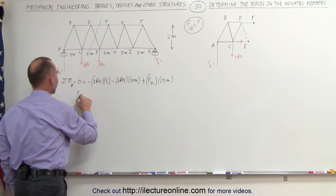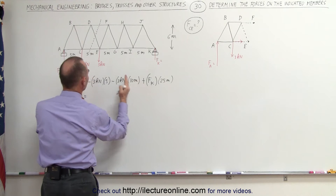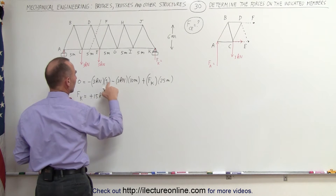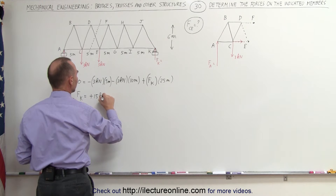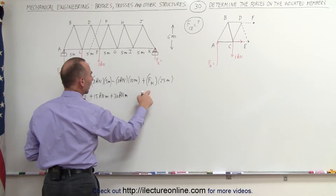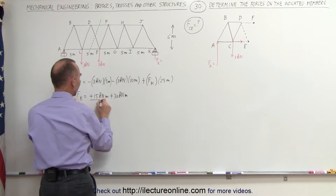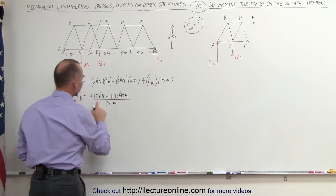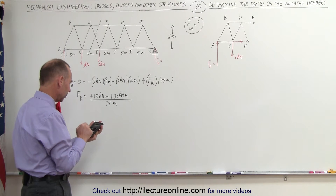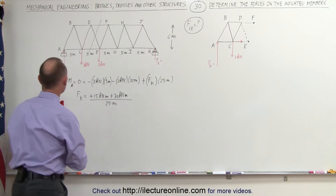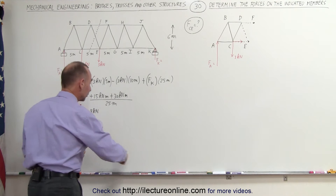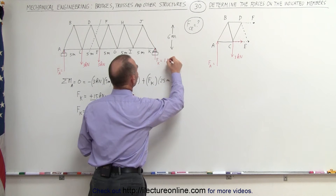Now we can solve for F sub K. Moving the two negative terms to the other side gives plus 15 kilonewton·meters plus 30 kilonewton·meters. Dividing both sides by 25 meters: 45 divided by 25 equals 1.8. So the force at K is equal to 1.8 kilonewtons. Let's go ahead and label that: 1.8 kilonewtons.